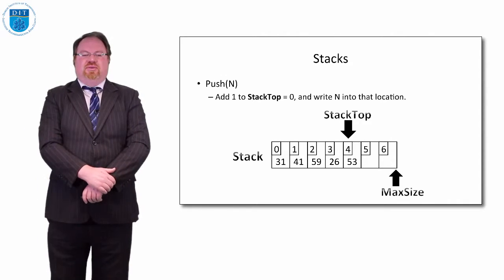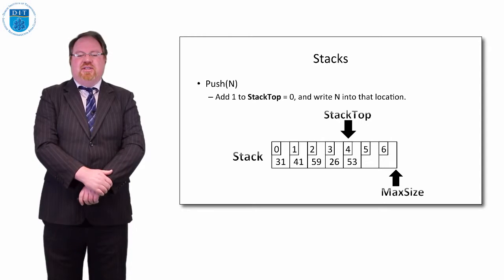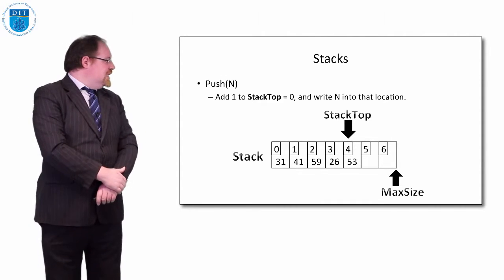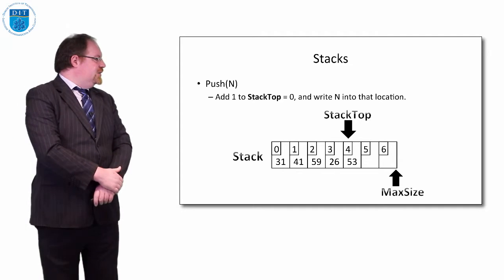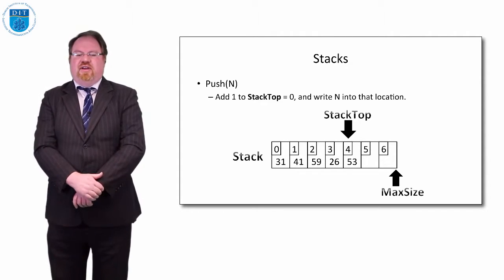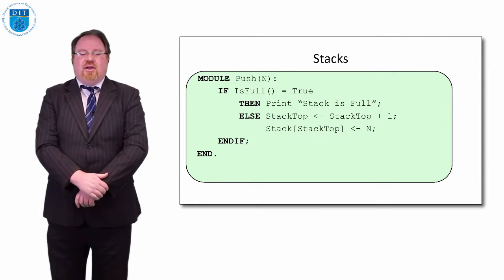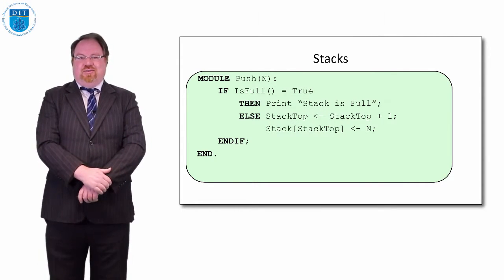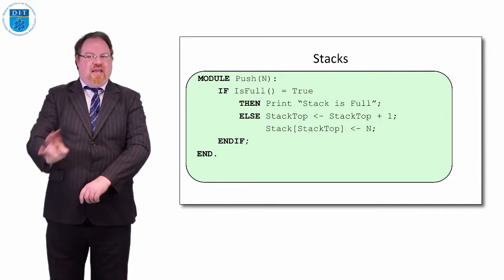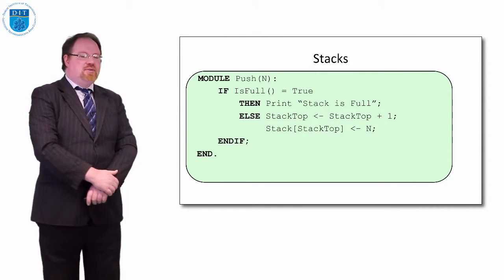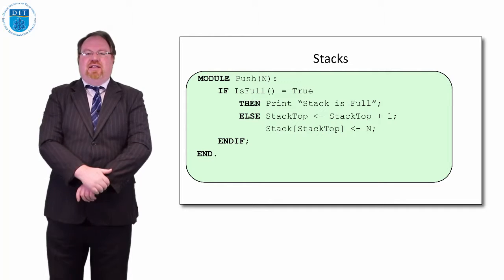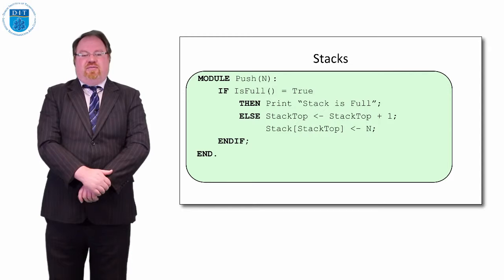Now let's look at how we add a value onto a stack. It's simple — there are two things we need to do. We need to move the stack top pointer up by one, and then write the value into that new position. So stack top is currently pointing at element number four. If we add one onto stack top, it'll point to element number five, and then we write the value we need to push into it. In code, the push module takes in a variable n which is the value to write. First we check if the stack is full — if so, we print stack is full and stop. Otherwise, we increment stack top by one and write n into the array at the new stack top position.